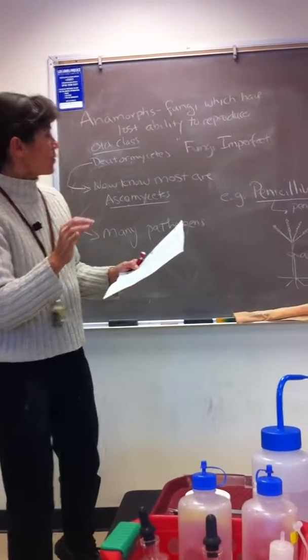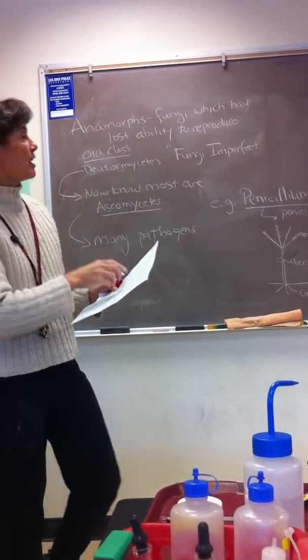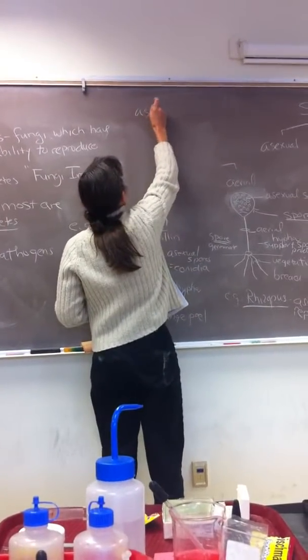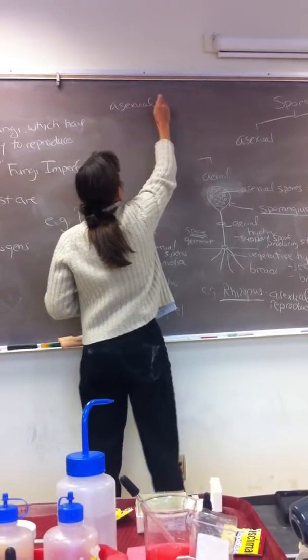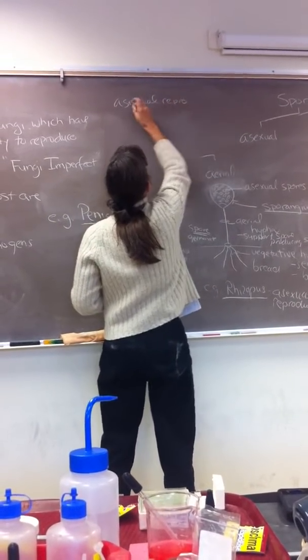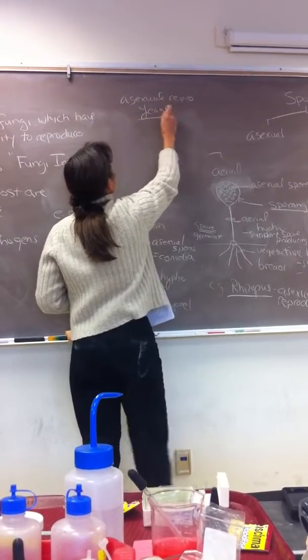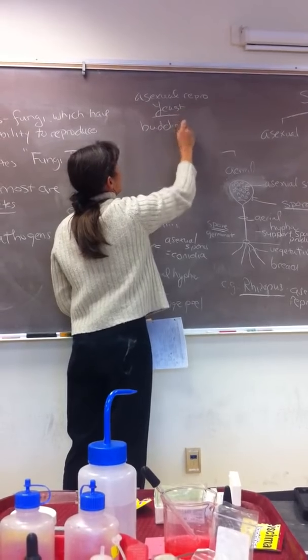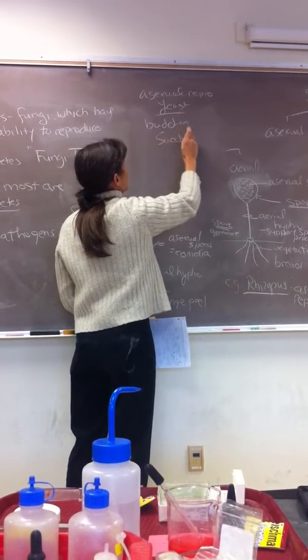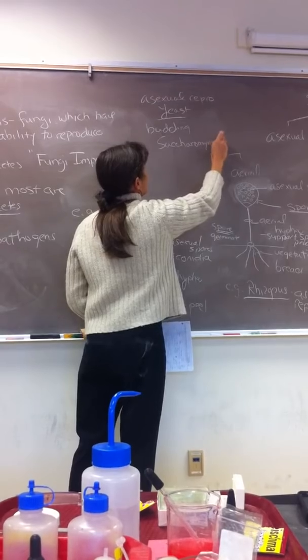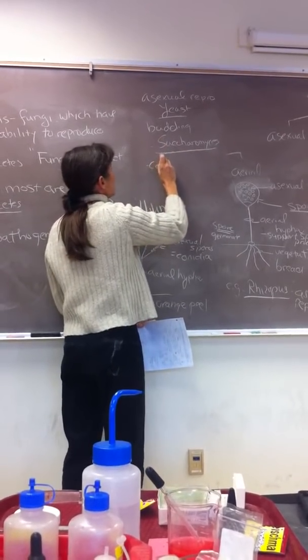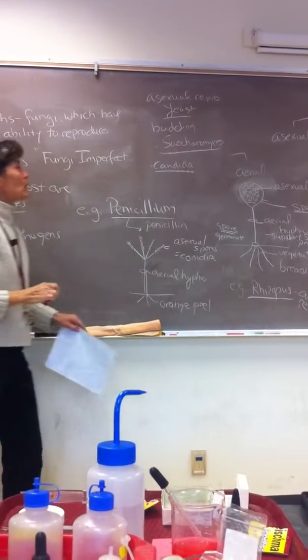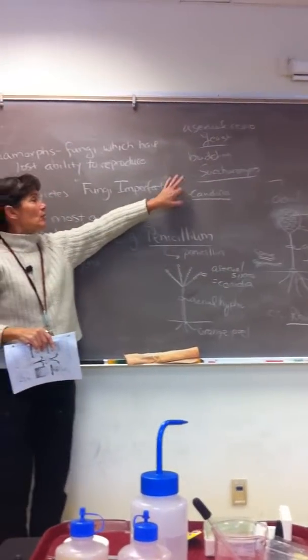So in addition today, as we mentioned, we will see asexual reproduction. Asexual reproduction in yeast is by which process? By budding, right? And you'll be seeing Saccharomyces. In fact, we'll get a little yeast culture going here, and Candida. Candida albicans. We have prepared slides of both of these, so I hope you'll see budding.